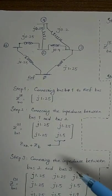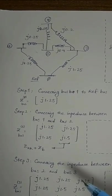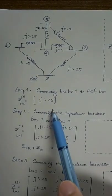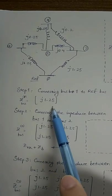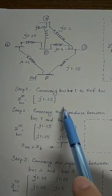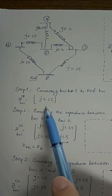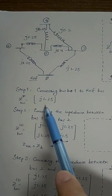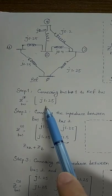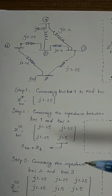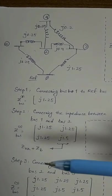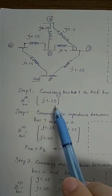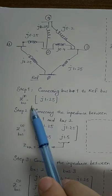So the only component in the matrix would be the value of this new impedance, which we're going to connect between the new bus bar and the reference bus bar. Therefore, we are writing a new matrix whose dimension is 1×1, and the only parameter in this matrix would be J1.25, which is the new impedance. This is step one. Since we don't have any original Z-bus here, we are creating everything from scratch.